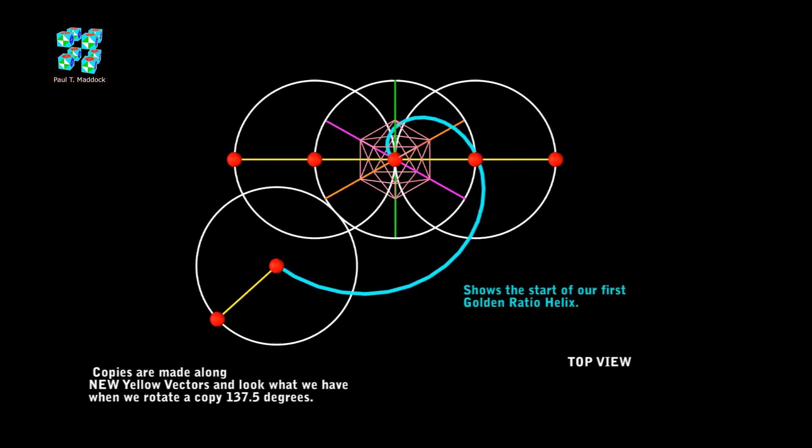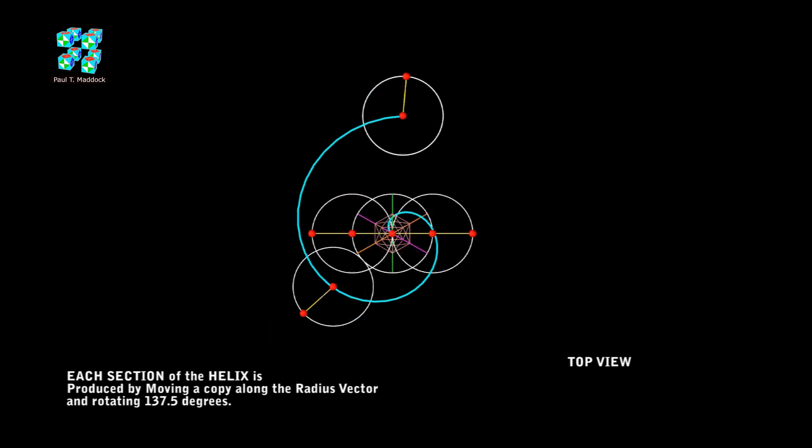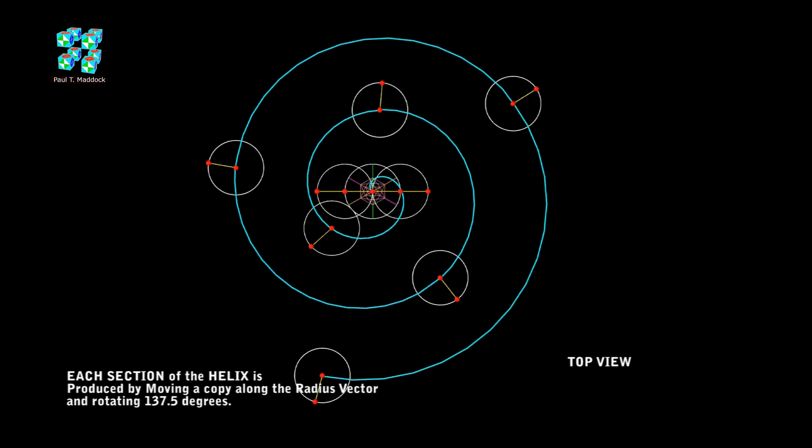Now, I'm going to make a copy of that ring on the right and move it out again. And I'm going to rotate it around the center point, 137.5 degrees. You can see that three red balls are arranged in a sequence around the spiral. I'm going to repeat this process, copying along the vector and rotating it 137.5 degrees, going through positions four, five, six, seven, and eight. This will keep repeating as long as you want. It can go to infinity.